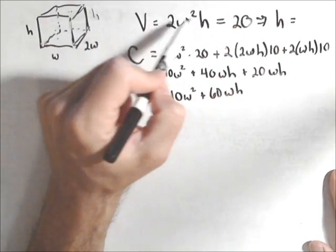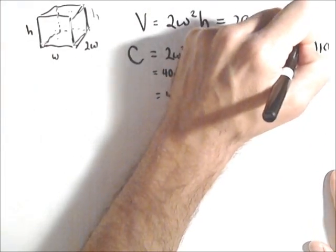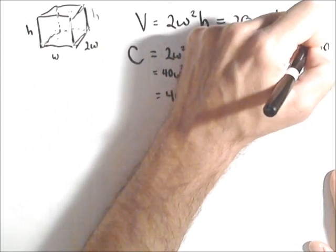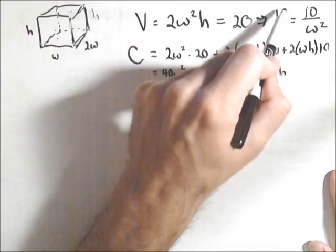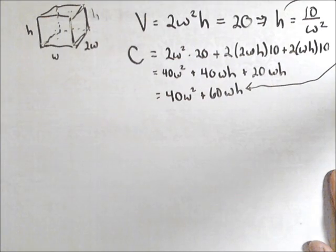So let's solve this guy for h so we can substitute out. h equals 20 over 2w squared, or just 10 over w squared. And I'm going to take that h and plug it in right there.